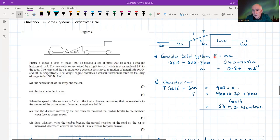We're going to consider the whole system and apply Newton's second law, F equals ma. The forward force is 1500 minus 600 minus 300, and that equals the total mass 1600 plus 900 times the acceleration. That gives us an acceleration of 0.24 meters per second squared.